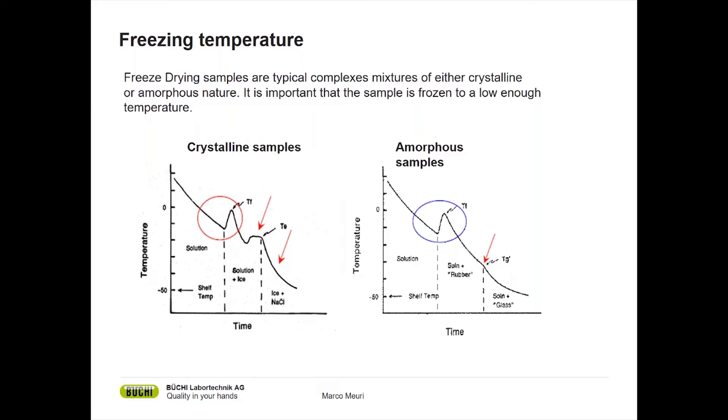But we still have some solution and we have ice. If we would now freeze dry the sample, we would start with a partly melted sample and would not end up with a nice cake of our product. So we want to cool it even further down. We see another small negative peak and a slight increase. And at that temperature, for ice and water and salt at about minus 20 degrees, this is the so-called eutectic temperature.